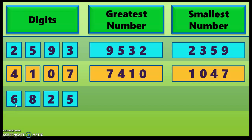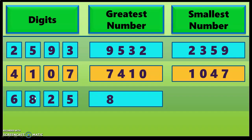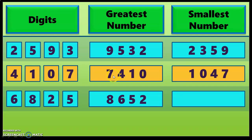Let us do the next example with digits 6, 8, 2 and 5. To form the greatest number, arrange the digits from big to small. The biggest number is 8, then 6, then 5, and number 2 is the smallest. So the greatest four-digit number that can be formed is 8652. To form the smallest number, arrange from small to big. The smallest is 2, then 5, then 6, and 8 is the biggest. So the smallest four-digit number is 2568.